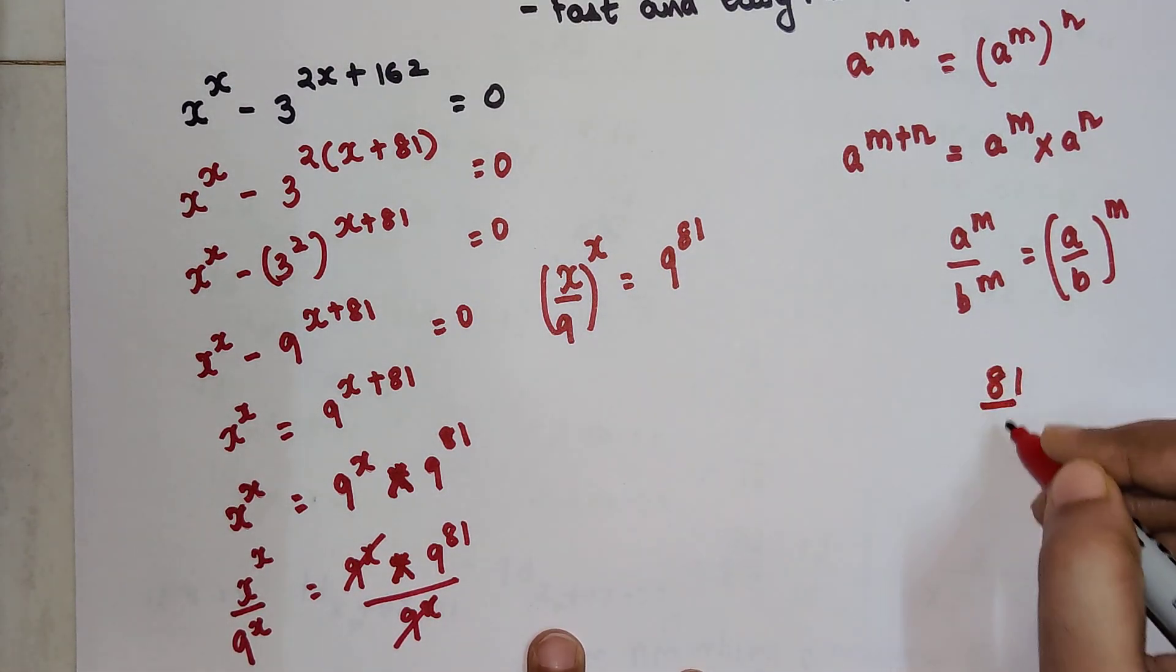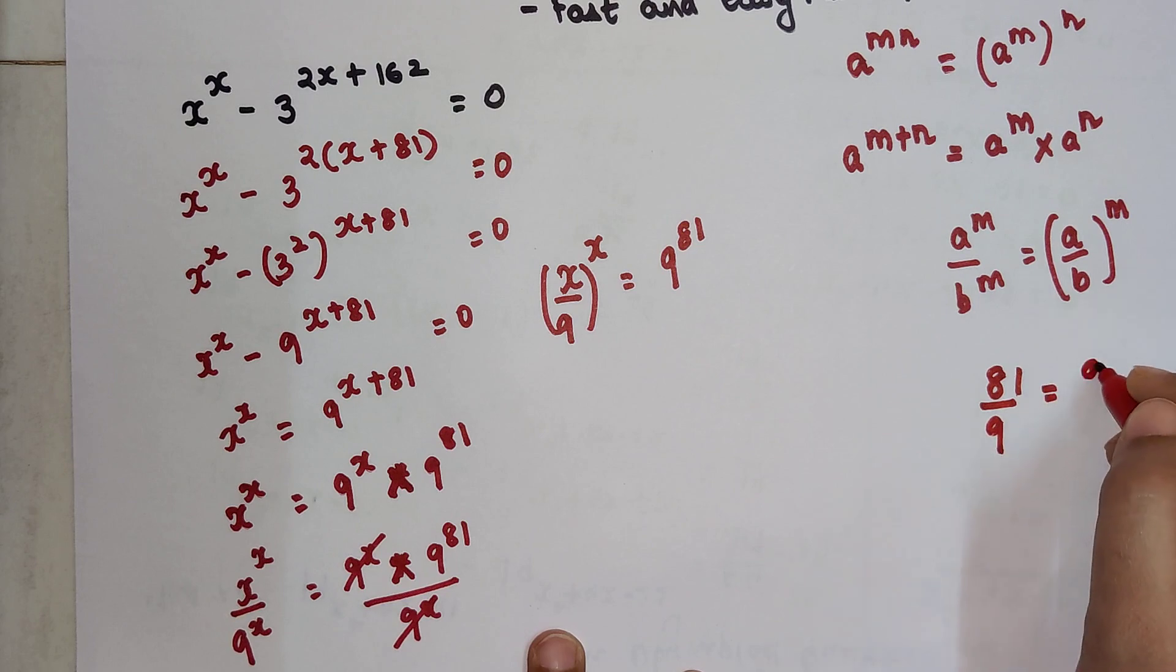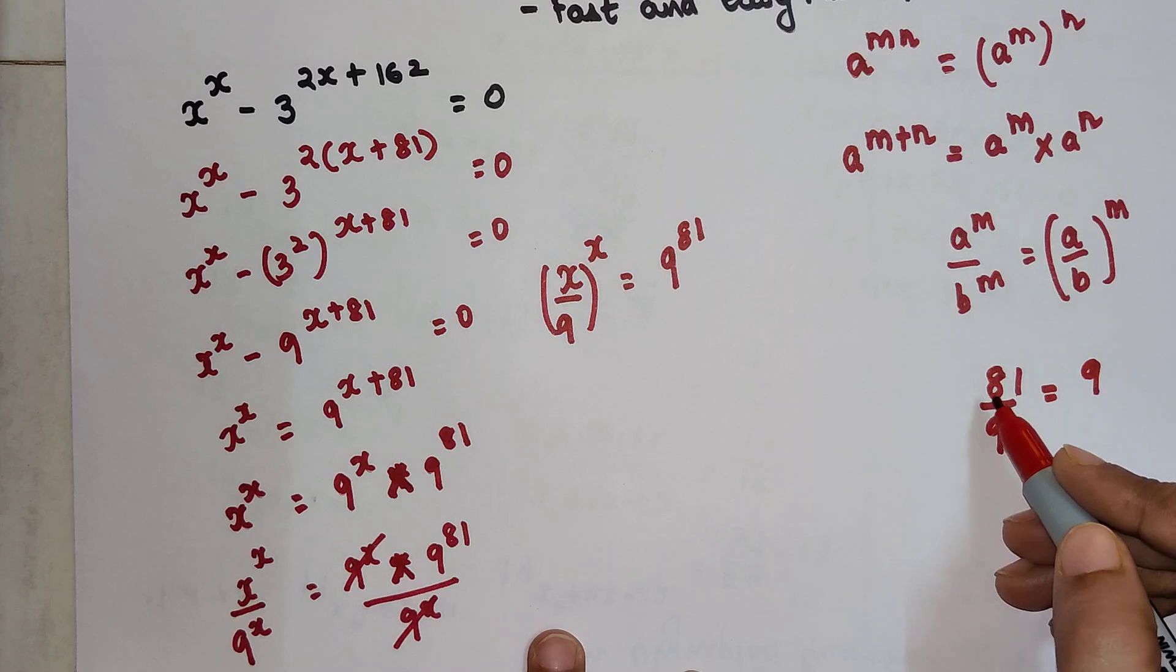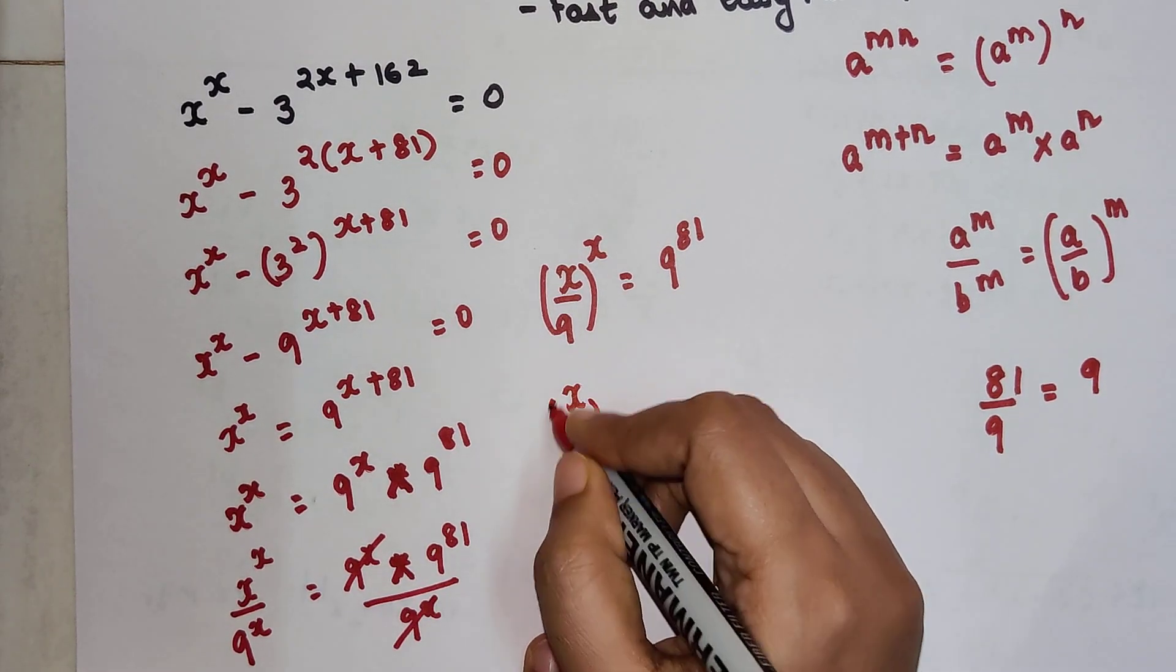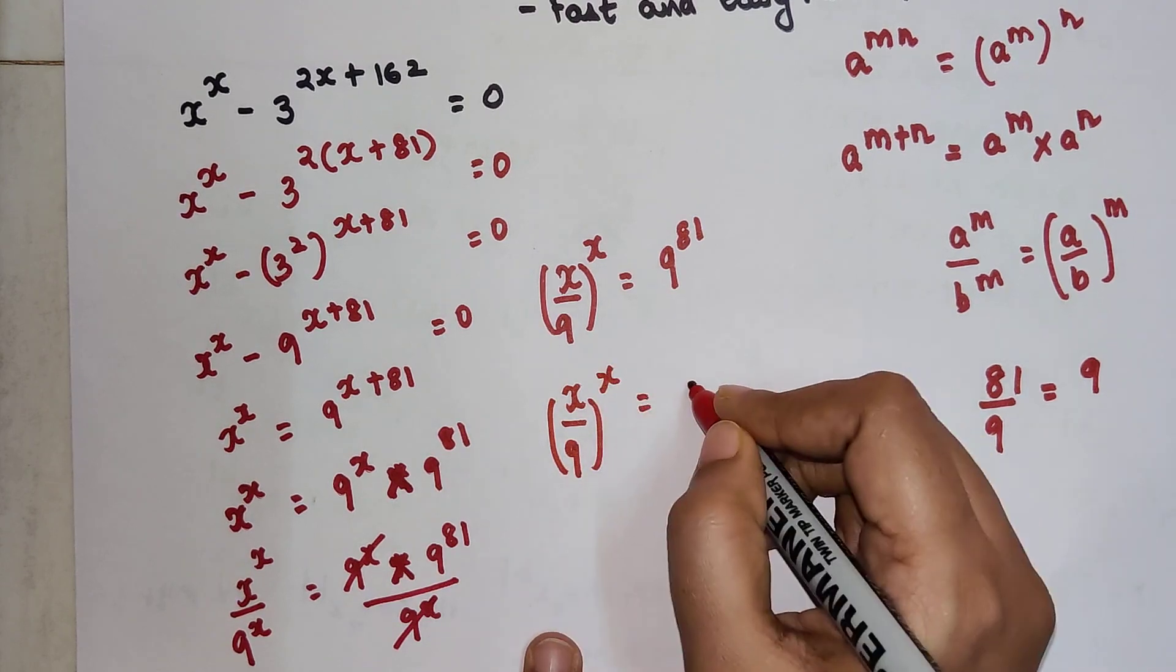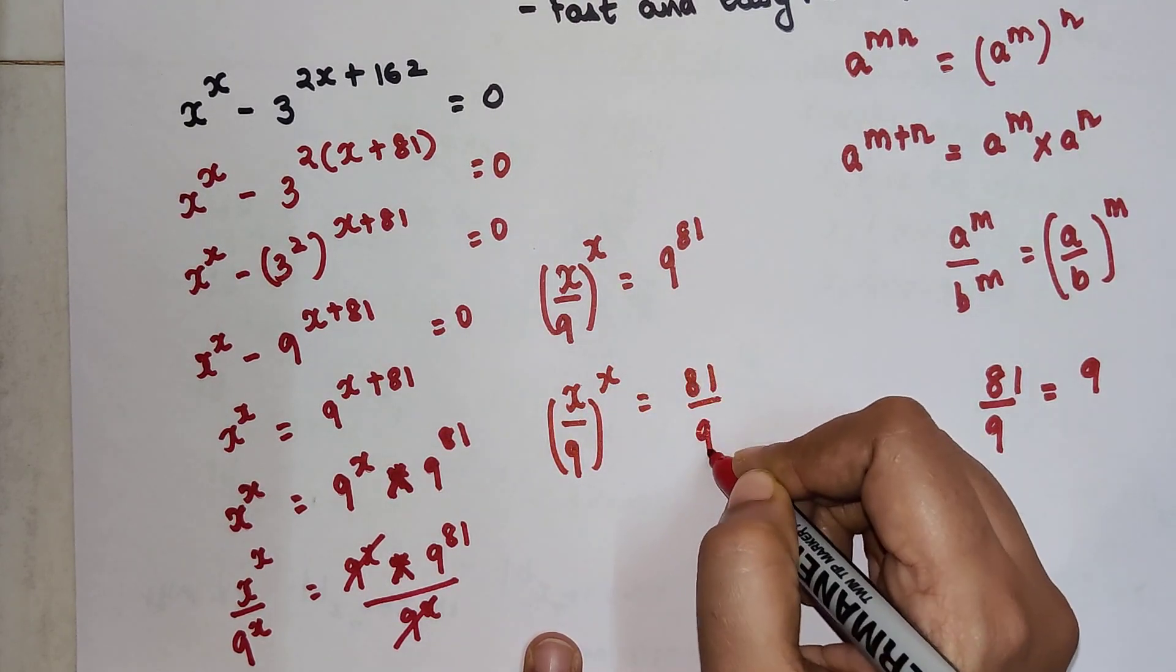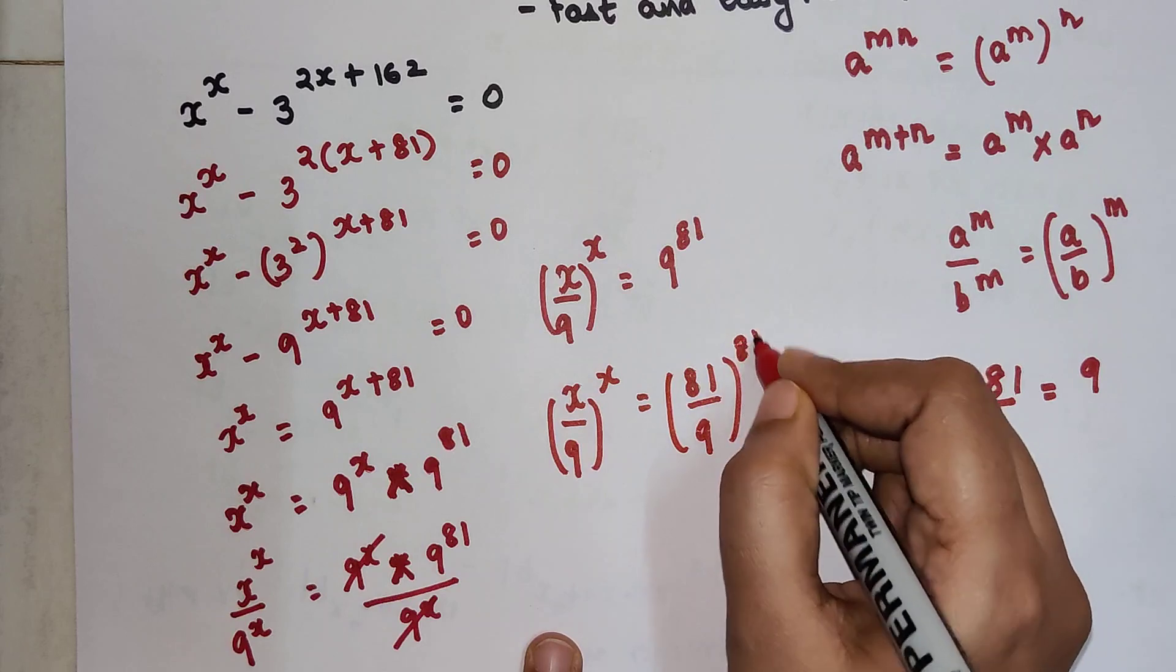Correct? So this 9 can be written as 81 upon 9. I will use this logic over here. So I will have 81 upon 9, the whole raised to 81.